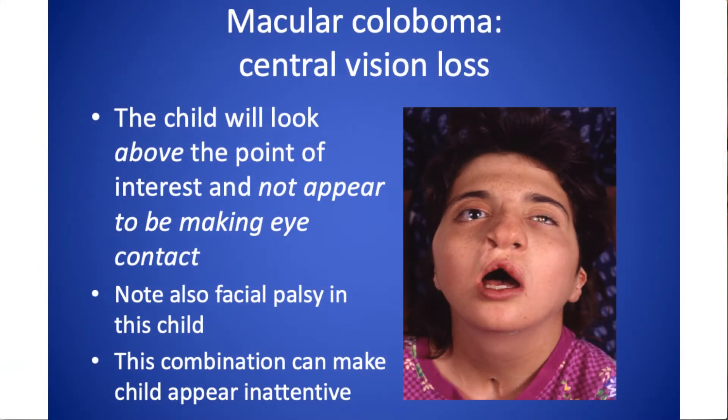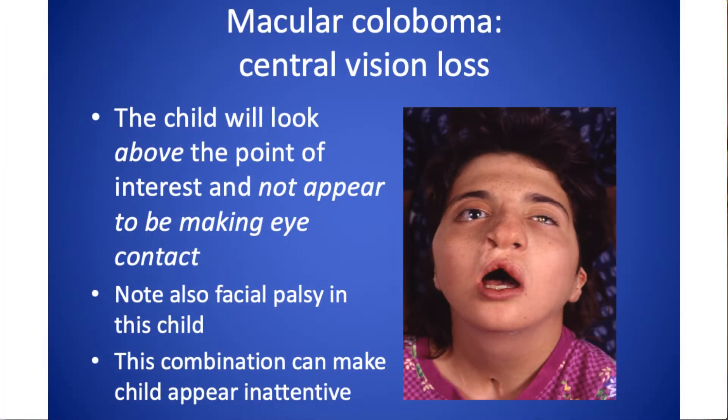Coloboma can also be in the macula — the part of the retina responsible for central vision — causing central vision loss. That means they'll need to use their peripheral vision to see things. If someone has central vision loss, it appears they're not making eye contact with you, but they may be paying very close attention. The young lady in this picture also has a bilateral facial palsy, meaning she can't animate her facial muscles. If someone has both central vision loss and bilateral facial palsy, it looks like they're looking off to the side and not paying attention — but that may not be the case at all.